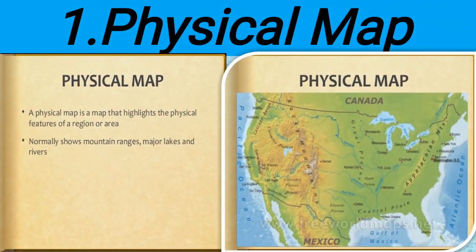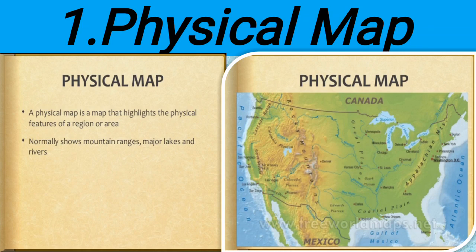On this slide, on the right side, you can see the physical map. A physical map is a map that highlights the physical features of a region or area. Normally, a physical map shows us mountain ranges, major lakes, and rivers. If you want to see the physical features of any country or place, you will use a physical map. Physical features are all the visible things on the earth that you can feel — mountains, rivers, lakes, major mountain ranges, and streams. So for showing such things, you are required to use a physical map.